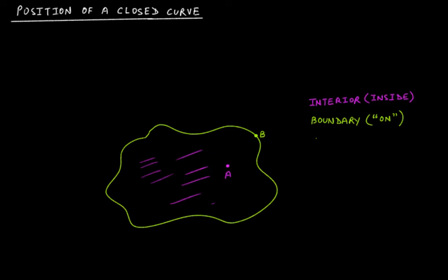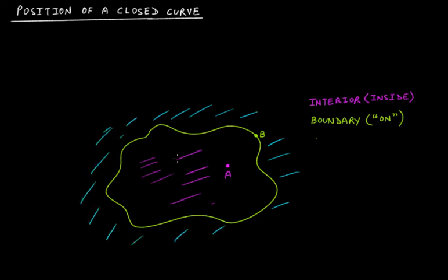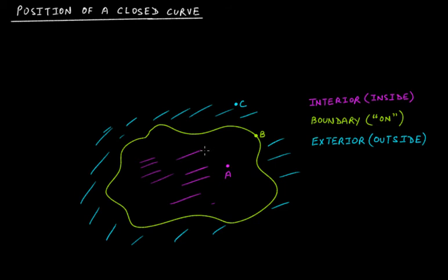If you look at this outer portion, this whole part of the curve that's outside — this will be the exterior, or outside. If we take any point C here, then we will say that point C is outside of this curve.